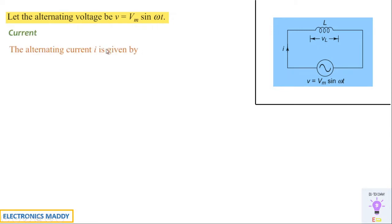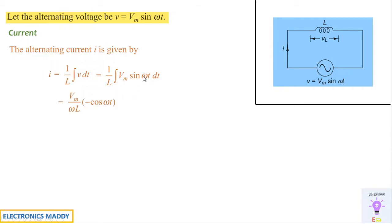The current flowing through the inductor is given by I = (1/L) ∫V dt, according to the relationship for current expression in an inductor. Substituting V = Vm sin ωt and integrating: the integral of sin ωt is −cos ωt, and integrating with respect to ω gives a factor of 1/ω, yielding I = (Vm / ωL)(−cos ωt). Next, we convert this using the trigonometric identity.